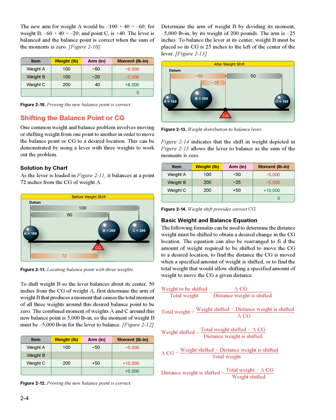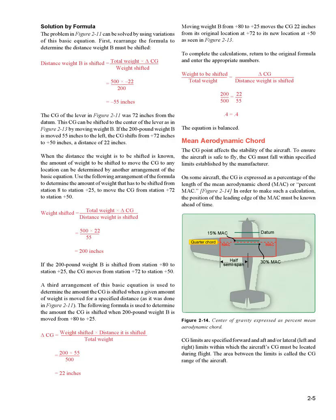Basic Weight and Balance Equation: the following formulas can be used to determine the distance weight must be shifted to obtain a desired change in CG location. The equation can also be rearranged to find the amount of weight required to be shifted to move the CG to a desired location, to find the distance the CG moves when a specified amount of weight is shifted, or to find the total weight that would allow shifting a specified weight to move the CG a given distance. Solution by formula: using the problem in figure 2-11, rearrange the formula to determine how far weight B must be shifted. The CG was at 72 inches from the datum; shifting the 200-pound weight B 55 inches to the left moves the CG from +72 to +50 inches — a change of 22 inches.